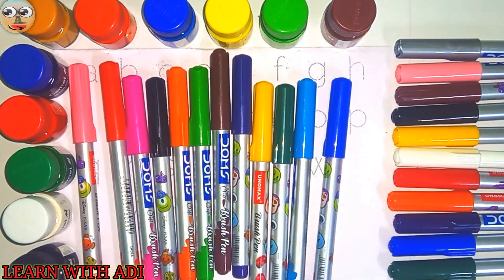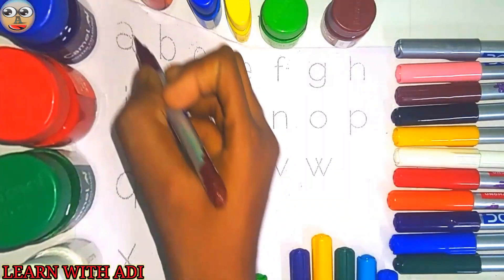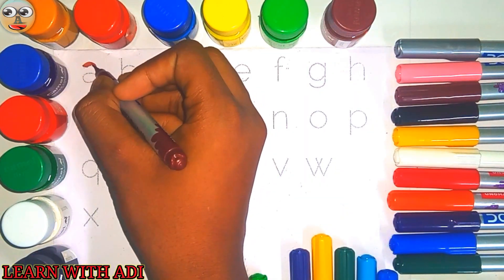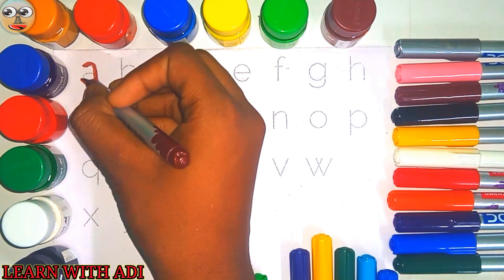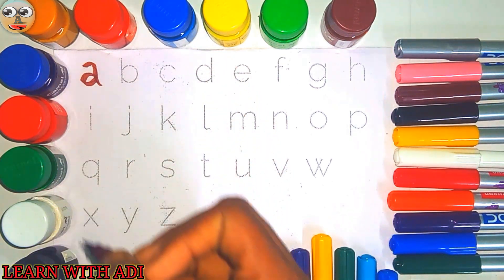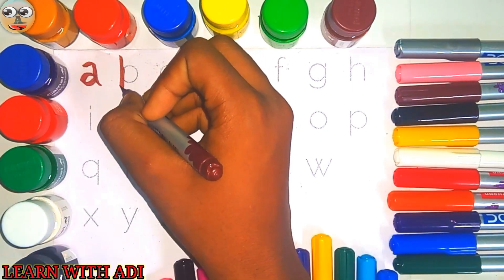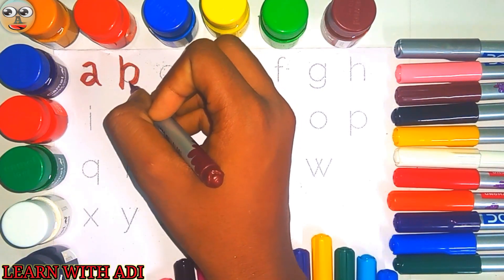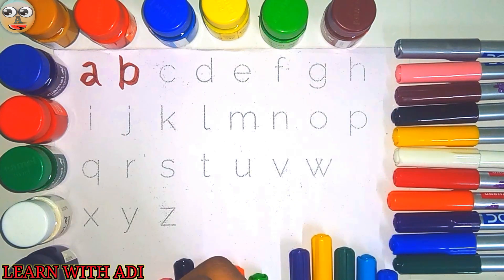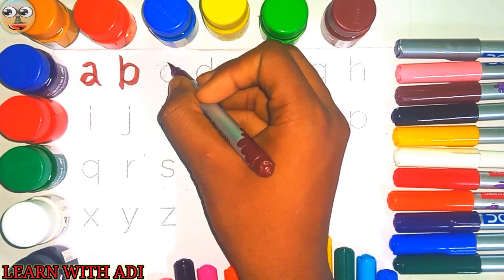Let's start the class. A for apple, A for ant. B for ball, B for bat. C for car, C for cat.